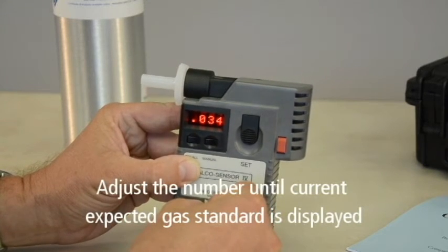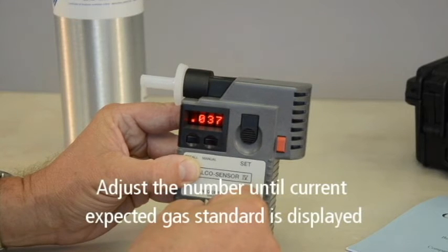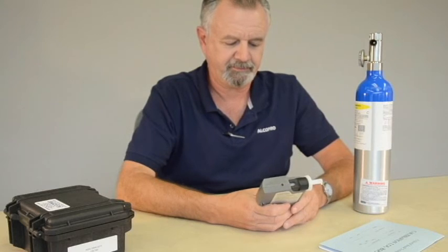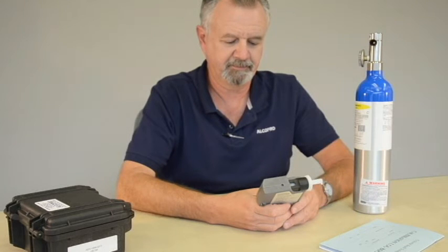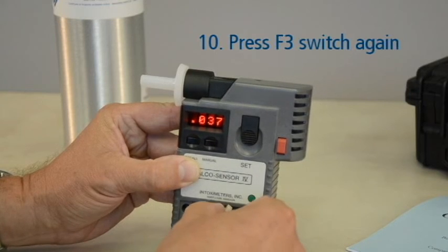Adjust the number until the current expected gas standard is displayed. Once you have obtained the expected gas standard value on the display, press F3 again.